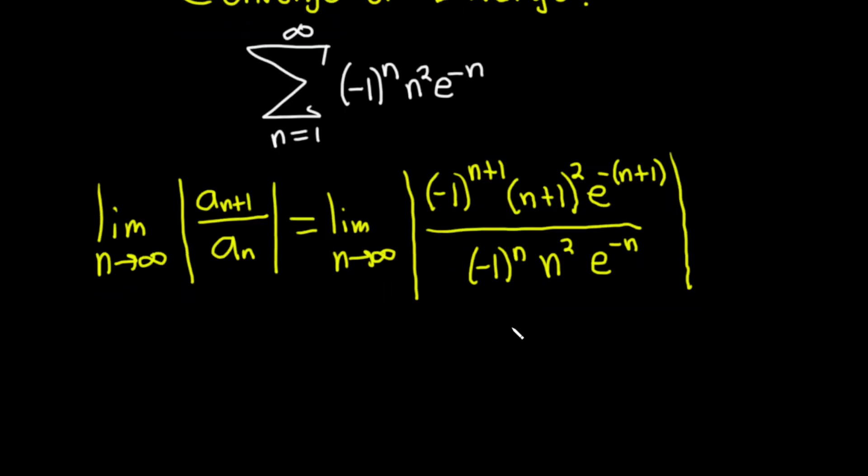Now we just have to simplify this. Let's first focus on these negative ones. They're completely going to go away because the absolute value of (-1) to any power is 1. These will go away, so this equals the limit as n approaches infinity. I'm going to drop the absolute values now because we don't need them anymore.